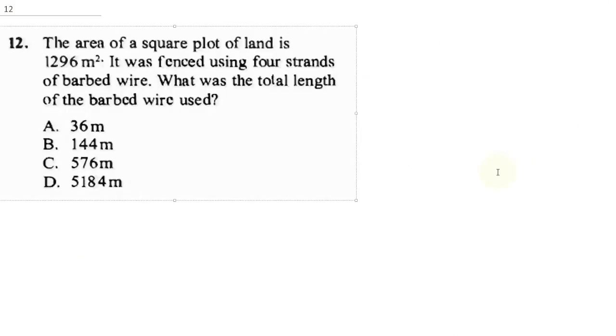Question 12 says the area of a square plot of land is 1296 meters squared. It was fenced using four strands of barbed wire. What was the total length of the barbed wire used? For you to understand this question, let's say this is the square farm.